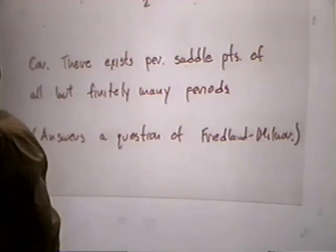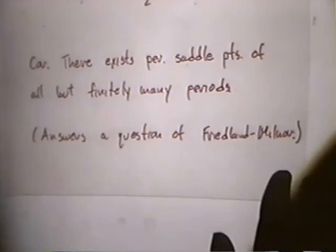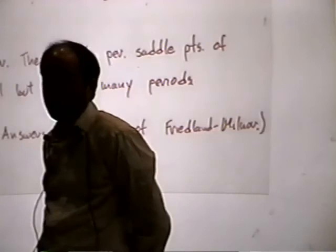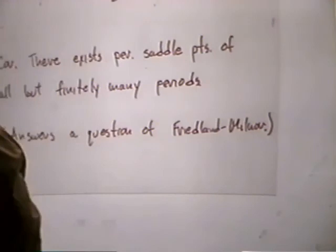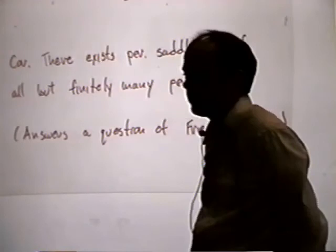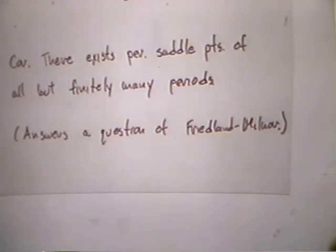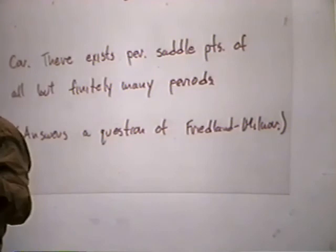As a corollary to this, there exist periodic saddle points of all but finitely many periods. Since this number is converging to one, it must eventually be larger than zero. This answers a question of Friedland and Milnor about the complex Hénon maps. This is an example of something that's only going to be true in this complex setting, because we really need all the periodic points in order to make this true — if you take a real slice, this is definitely false.